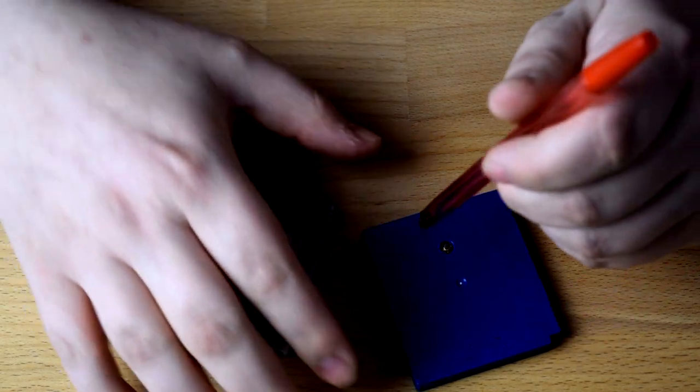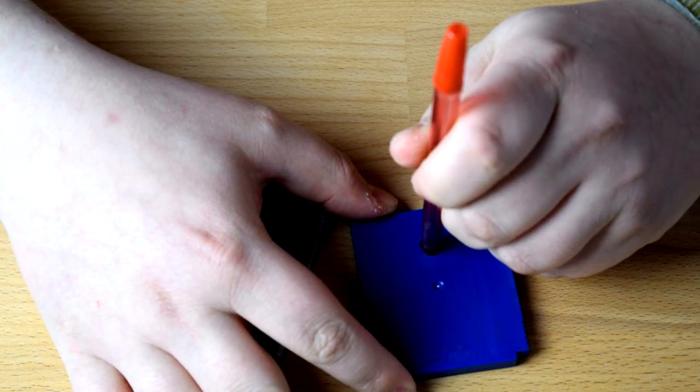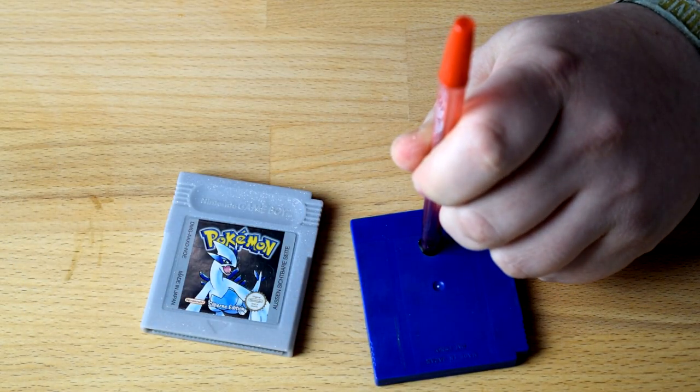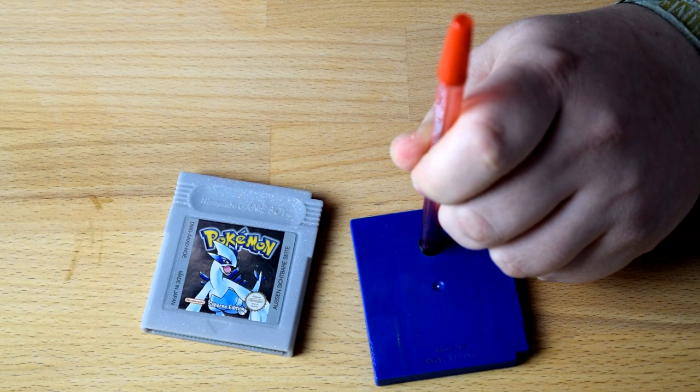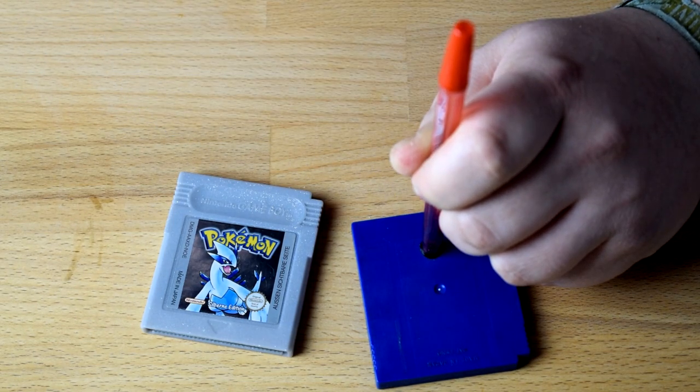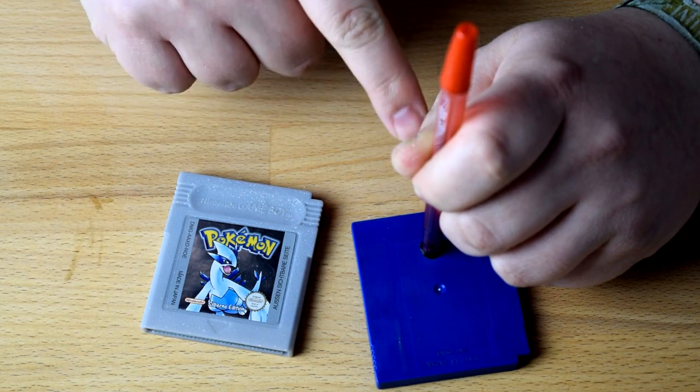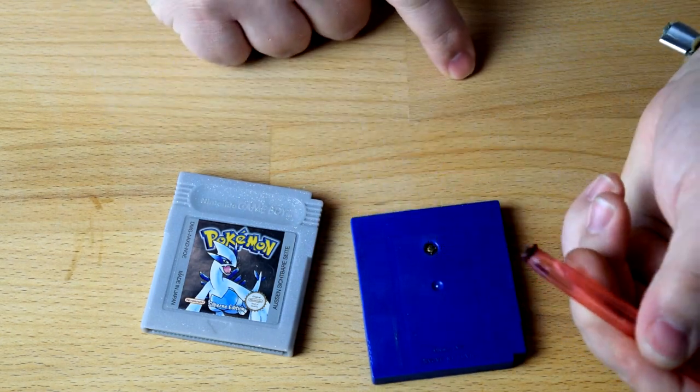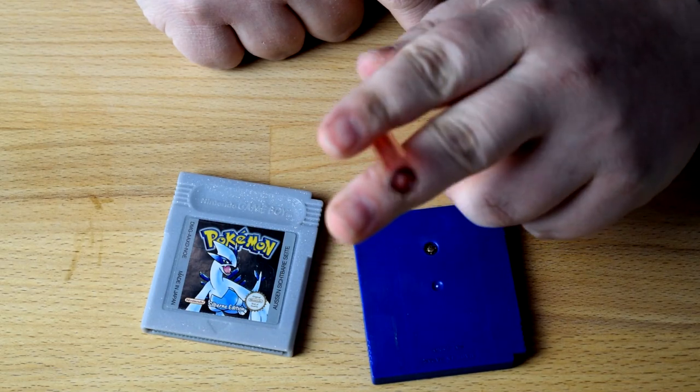And just press it on there firmly for a few seconds till it hardens again. Don't be concerned that the plastic will stick to the cartridge because they do not stick to each other. So after a few seconds just pull it off again and you have a perfect imprint.